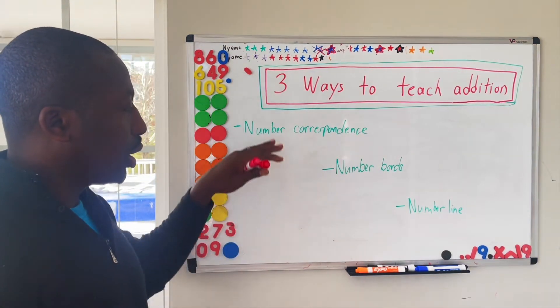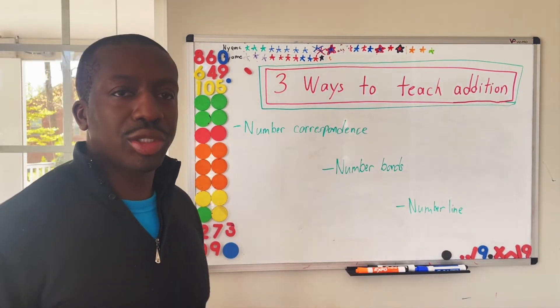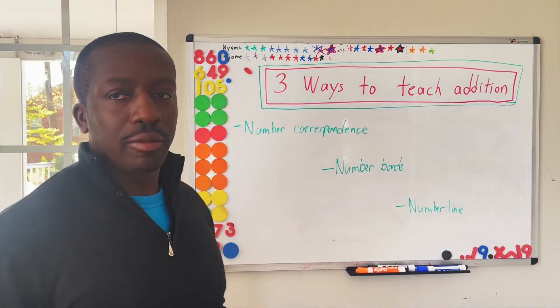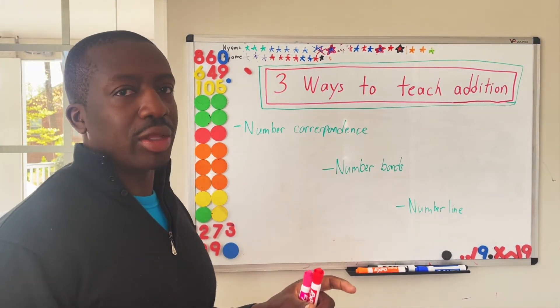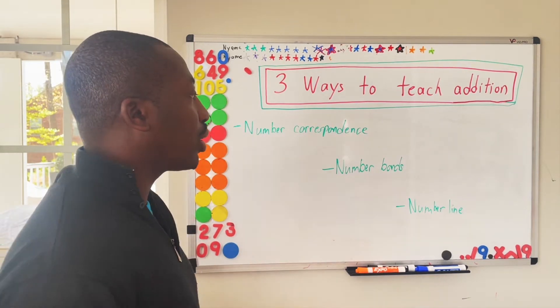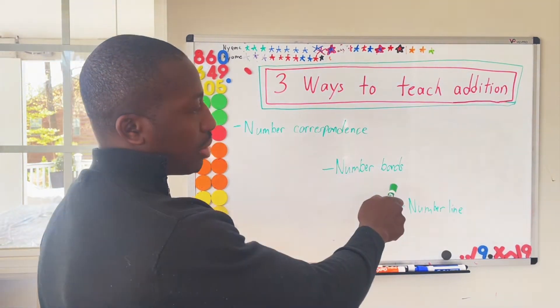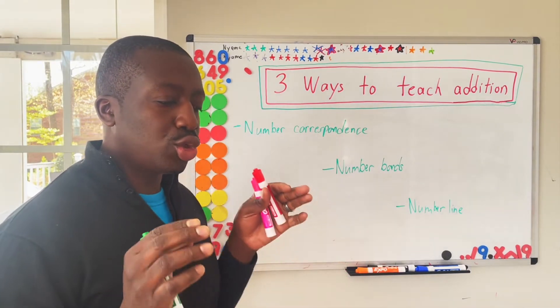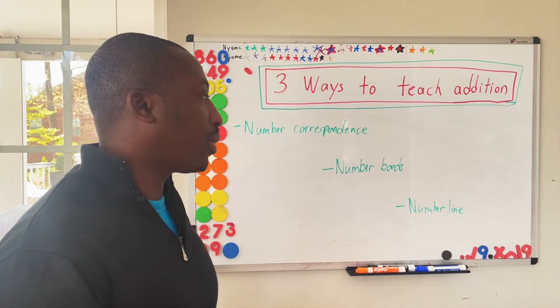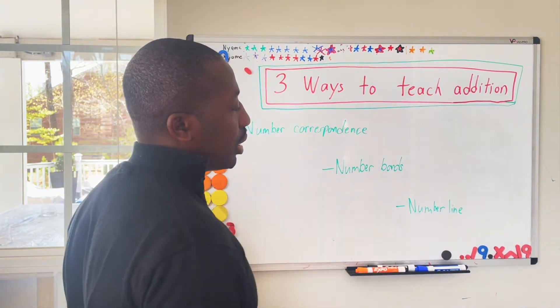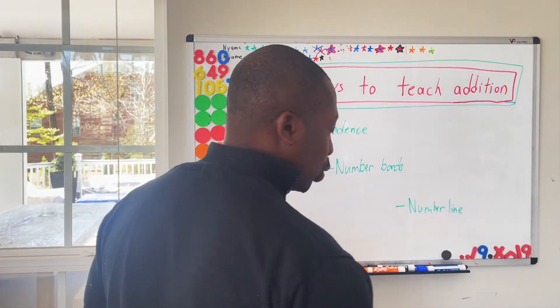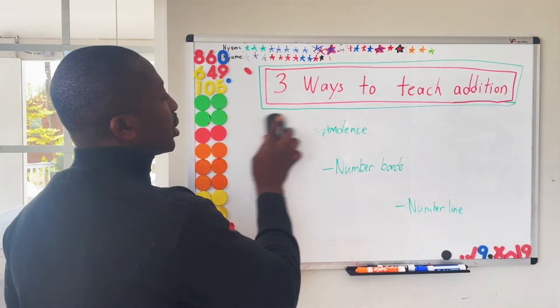Just to start. So these are the three most common methods that addition is taught. The first method is called number correspondence. And that's when you're adding two numbers together to equal a sum. Second method is number bond methods, where you show that the two numbers are connected to form a third higher or larger number. And the third method incorporates number lines. So with that, I will show the number correspondence.